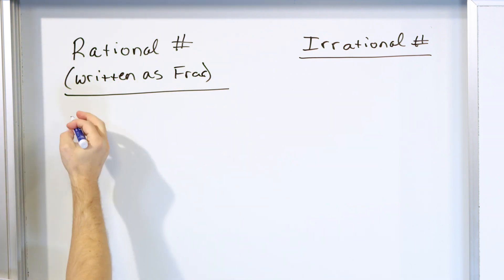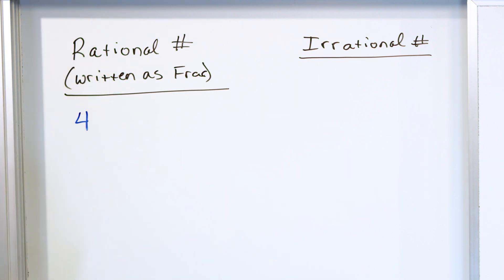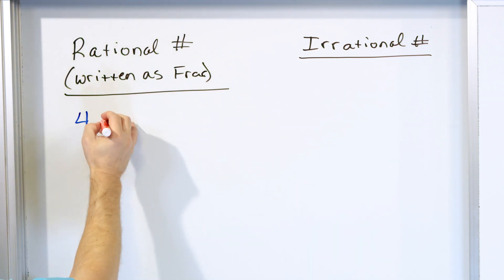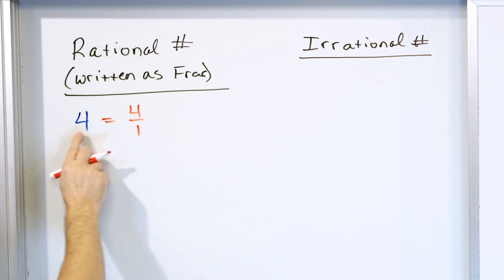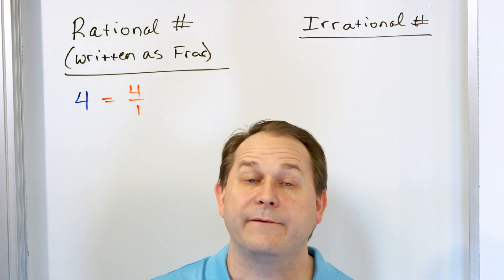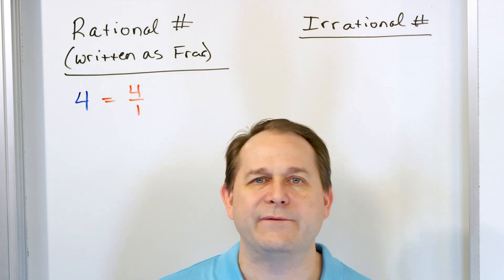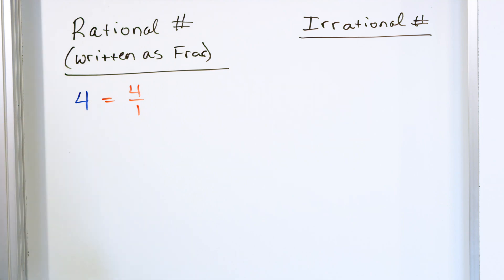Rational number. What about all the whole numbers that you know — the number four, the number three, and so on? Is the number four a rational number? All you have to do is say, can it be written as a fraction? The whole number four can be written as four over one. That's a fraction. And any whole number can be written as a fraction: 10 can be written as 10 over one, 25 as 25 over one. So all the whole numbers are all rational numbers.